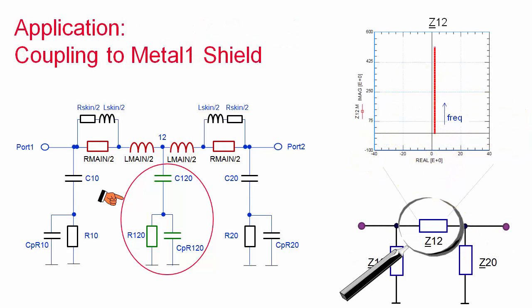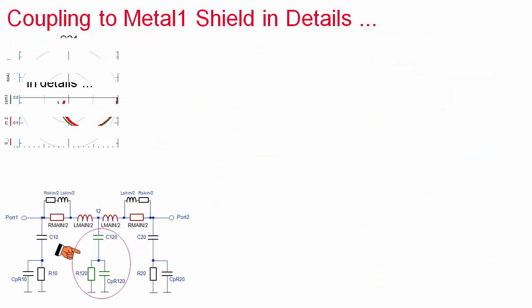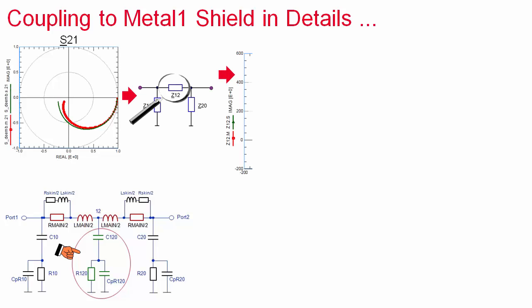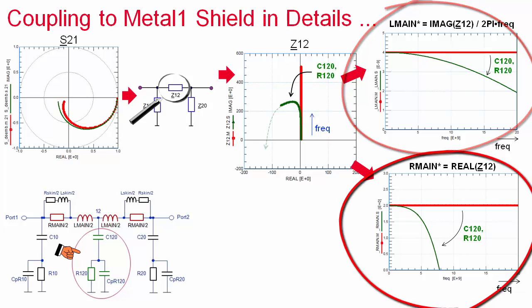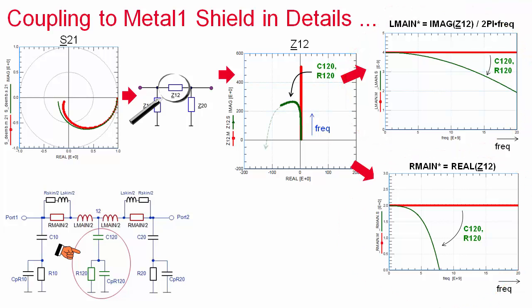Focusing once again on the trajectory of the pi schematic impedance Z12, we observe this time a dramatic change of direction, like a loop back. Consequently, both the effective inductance L main star, as well as the effective resistance R main star, drop with increasing frequency. Once again, this behavior allows one to distinguish between eddy current and metal one coupling.